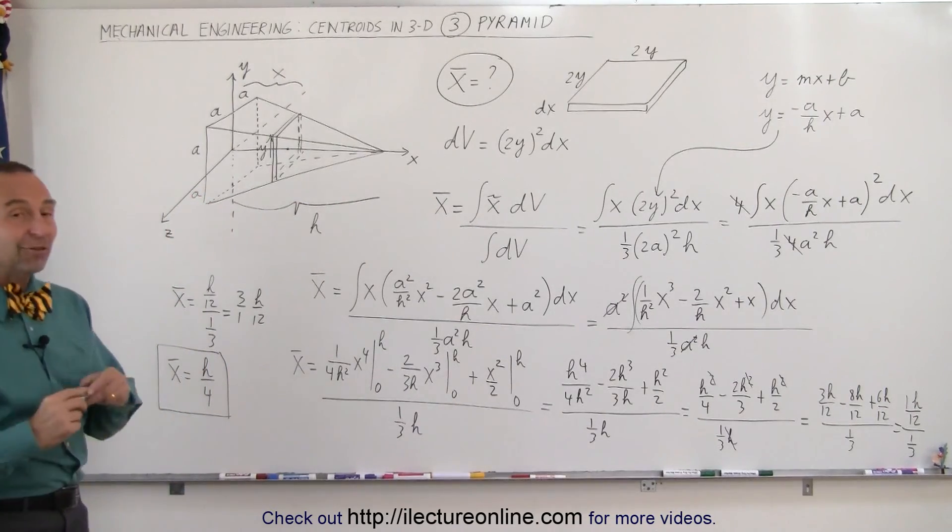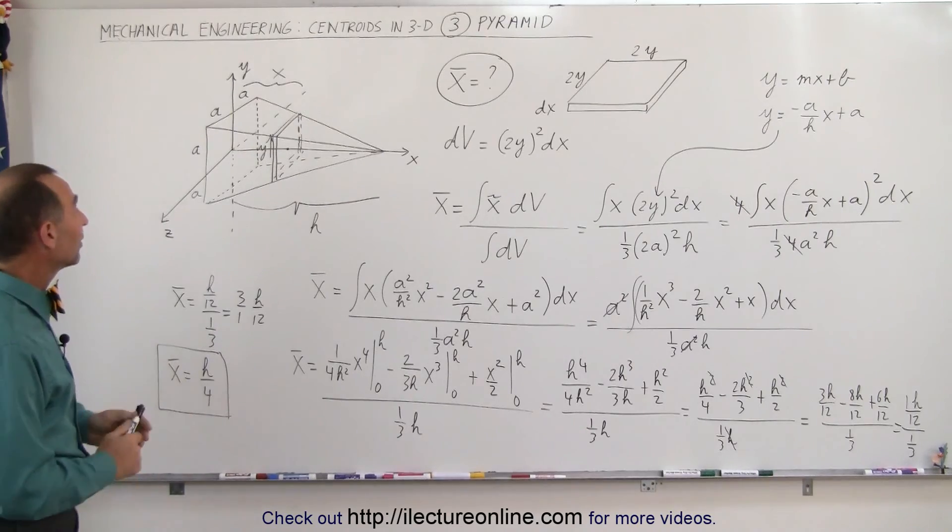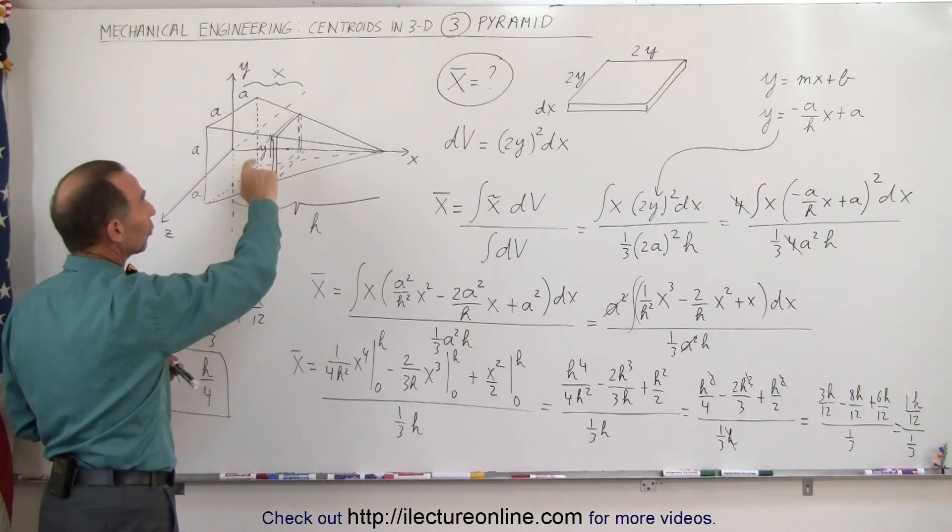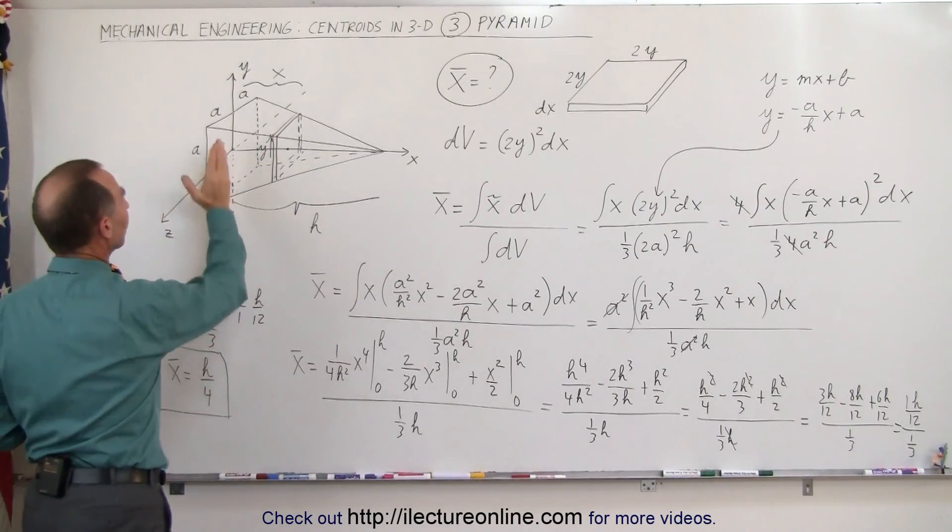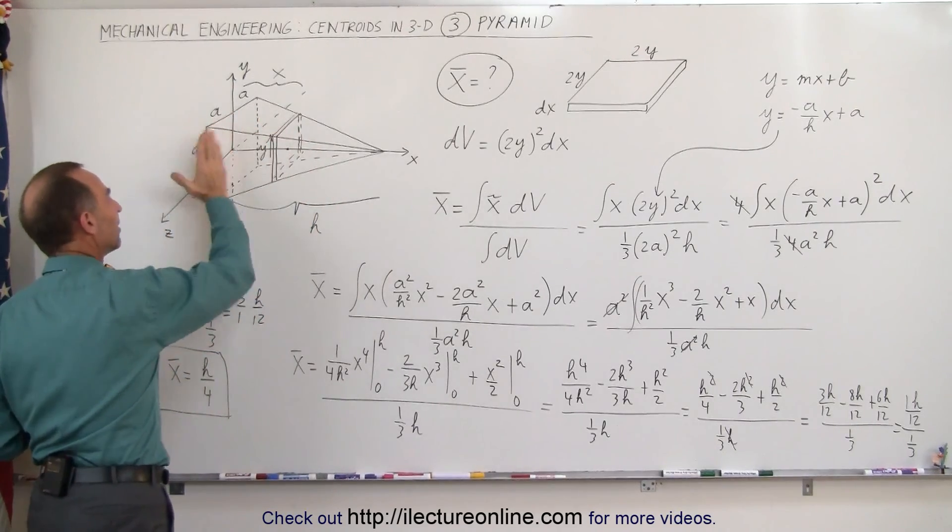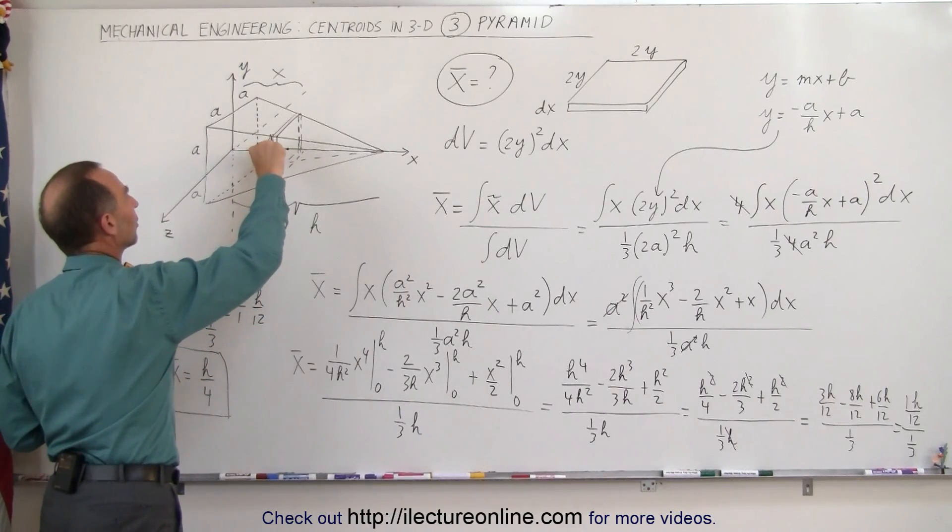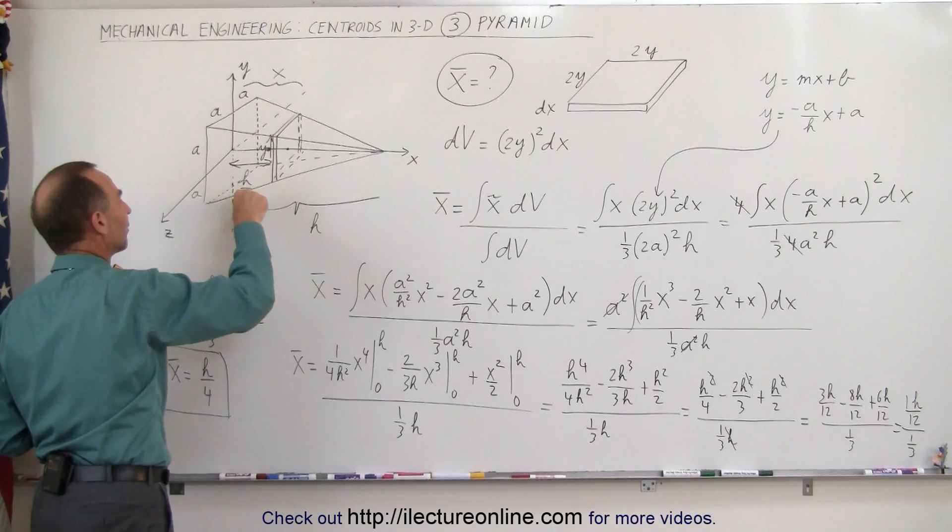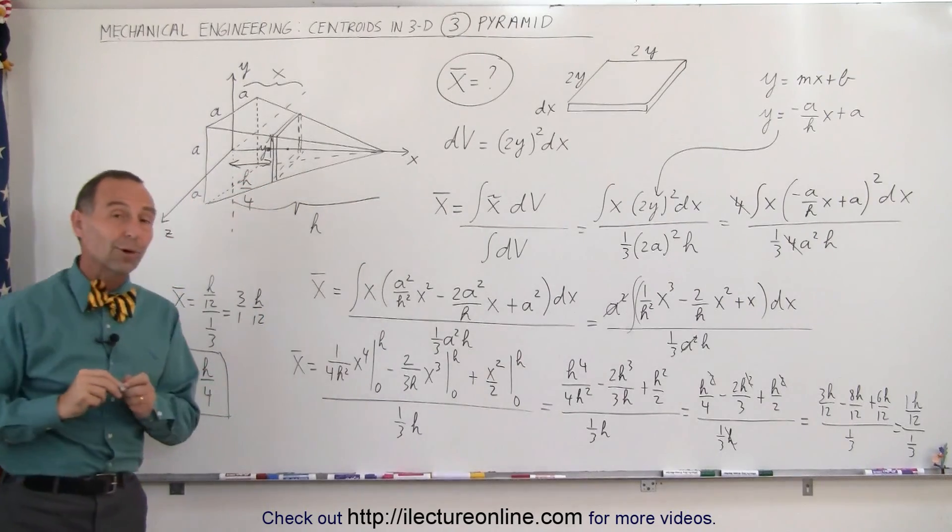It's a lot of algebra there, but eventually we did get the right answer. What we can say here is that the x-coordinate of the centroid of the pyramid is one-quarter the distance from the origin, because we have the base here against the origin. From there to there, the distance is h divided by 4, which makes that the centroid of the pyramid.